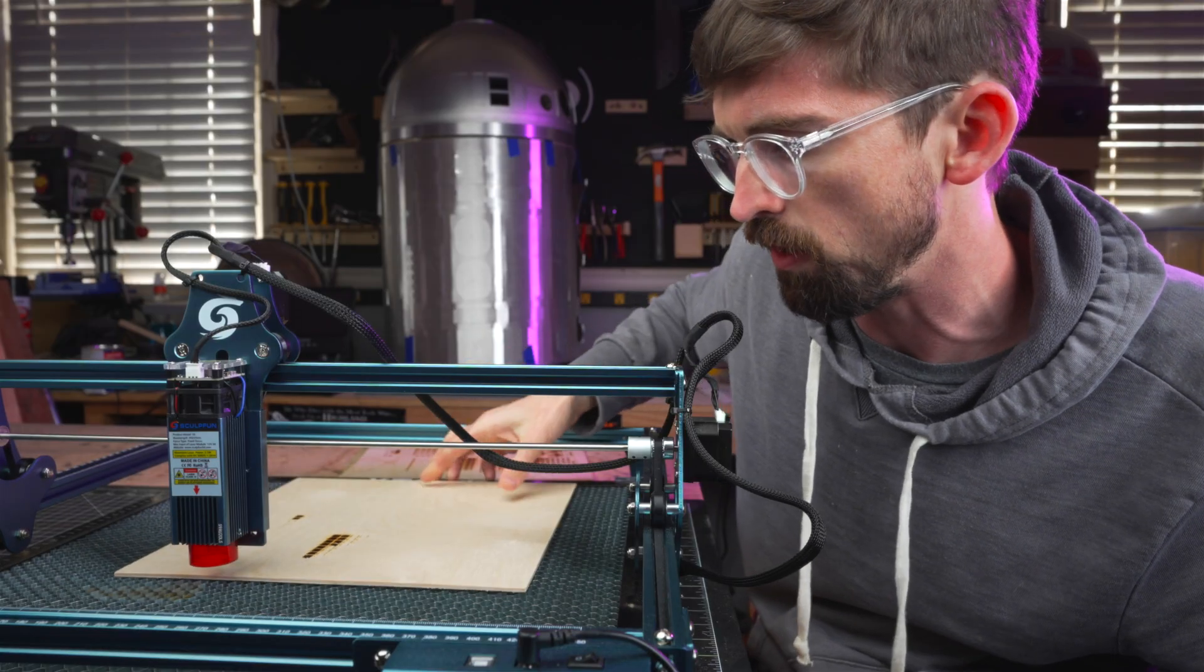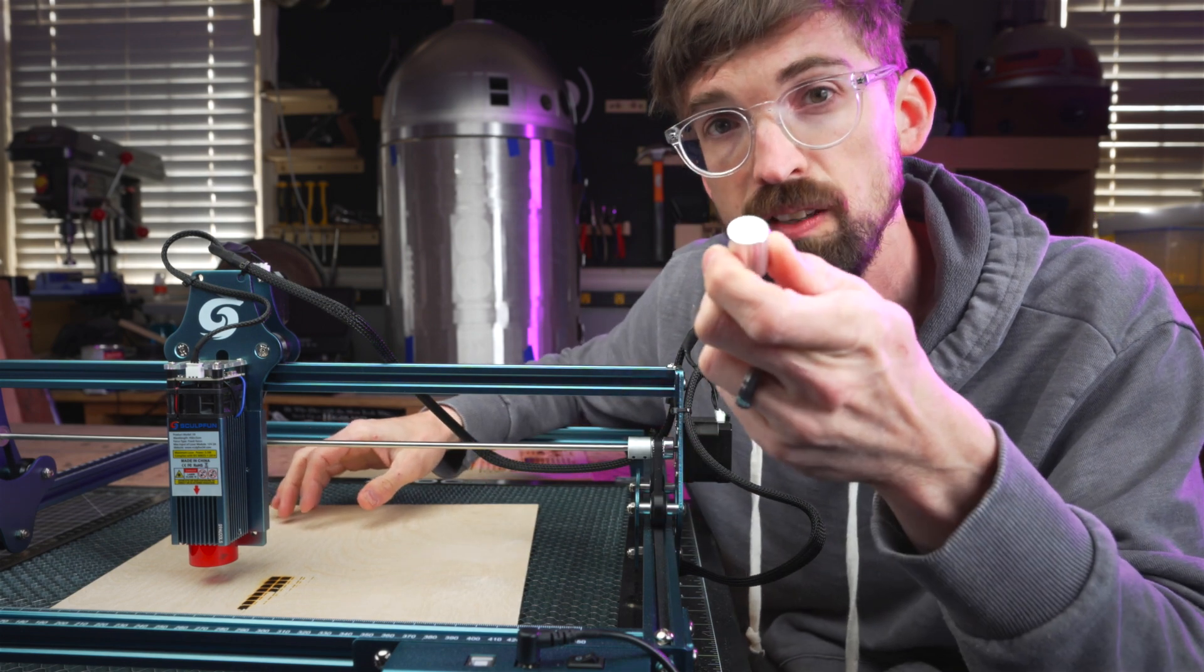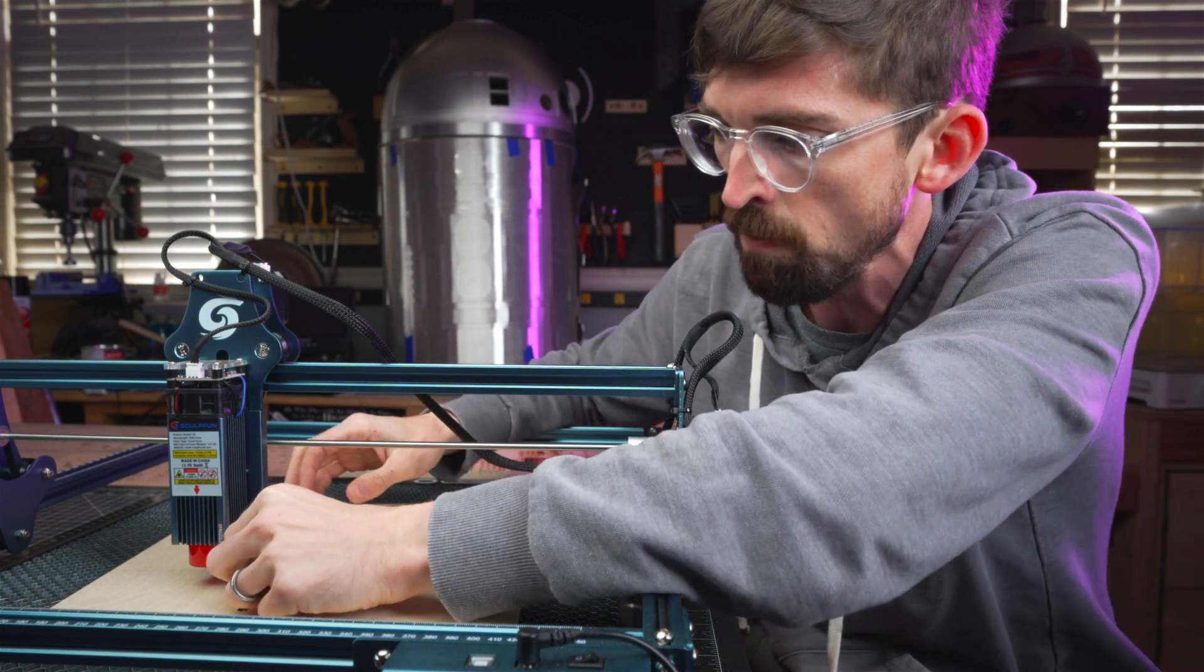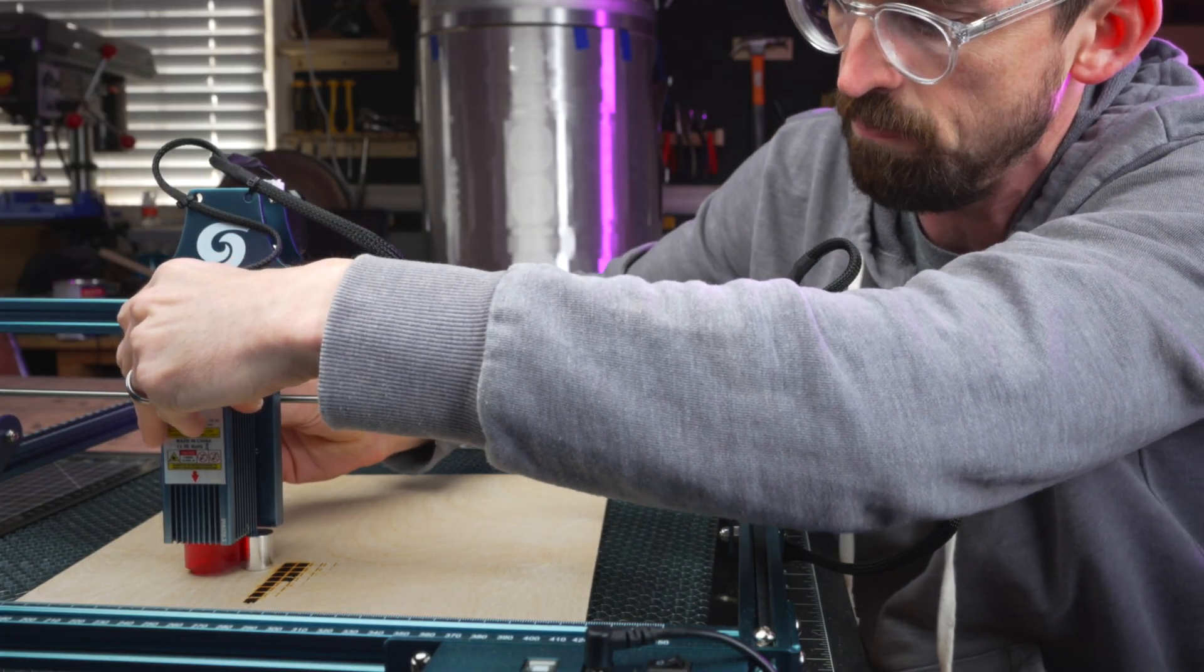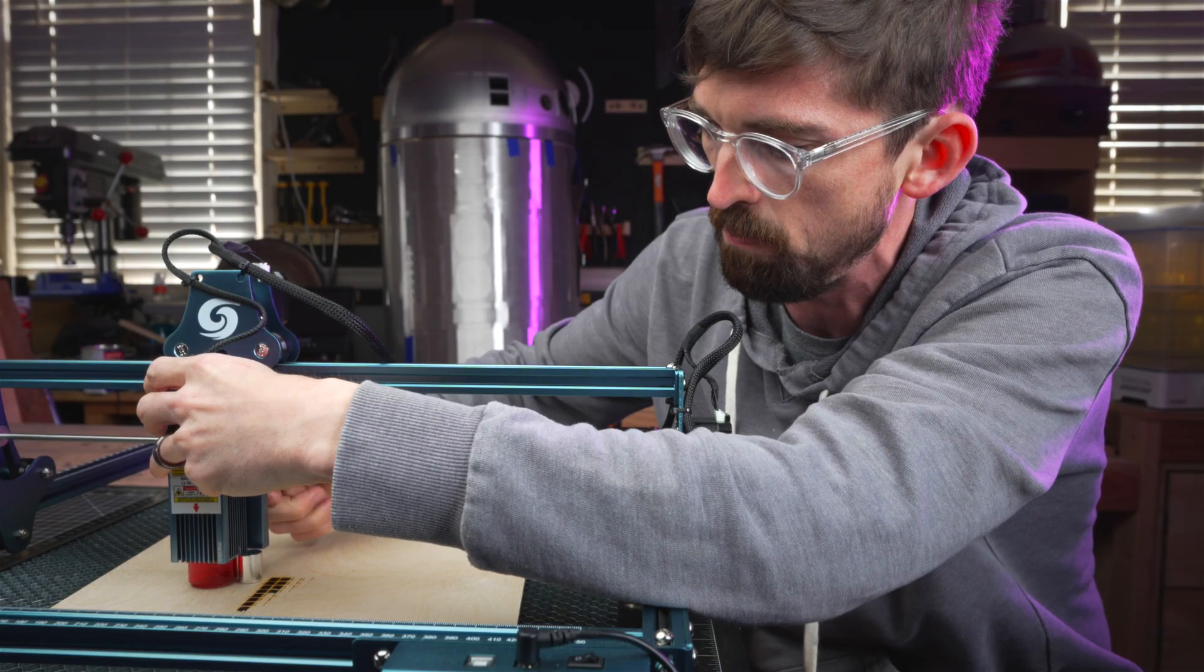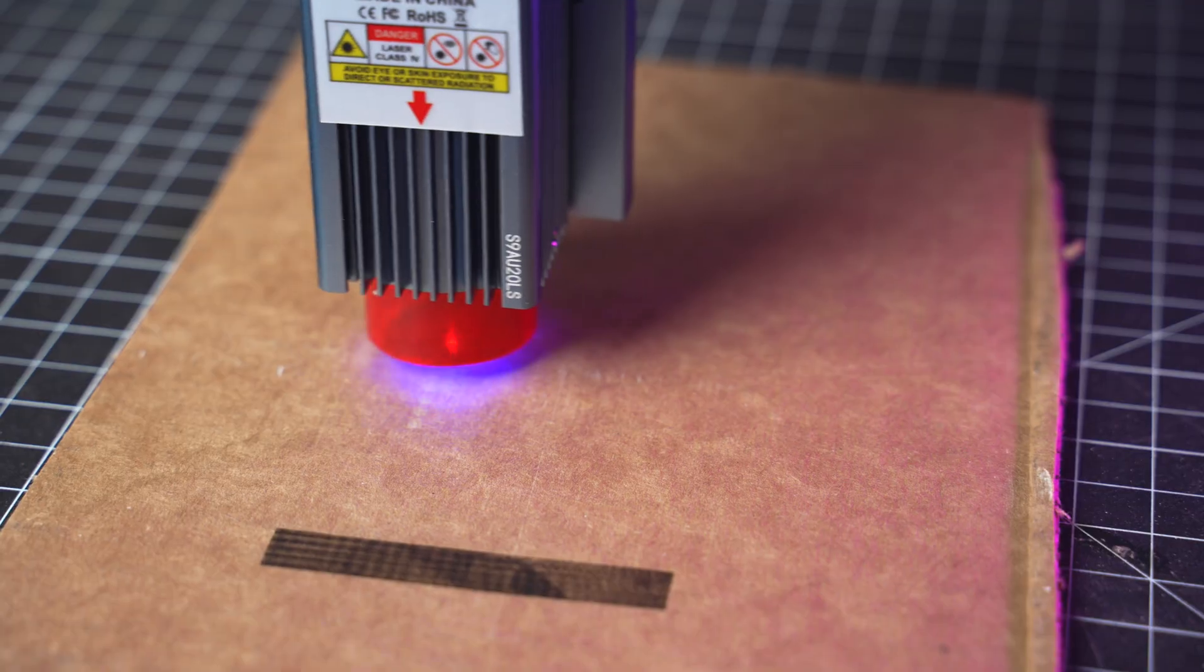In terms of focus, this is a pretty common way to do it. They give you this block that is the exact distance that you need to use. You put this off to the side, you unscrew the laser, you drop it down, tighten it back up, and then you remove this block. Then you've got the right focus distance for your material.